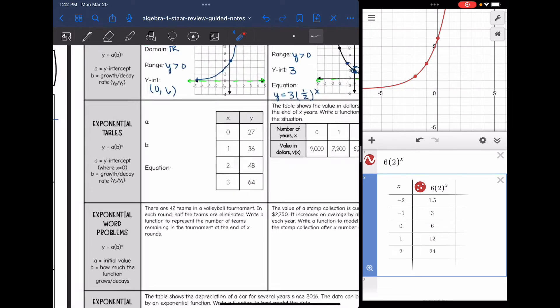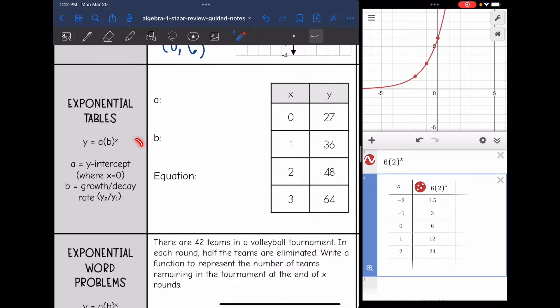Okay, let's look at tables now. So same form, y = a(b^x), a is the y-intercept, which is where x equals zero. And then we can find that growth or decay rate by doing y2 divided by y1.